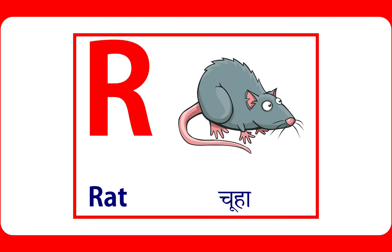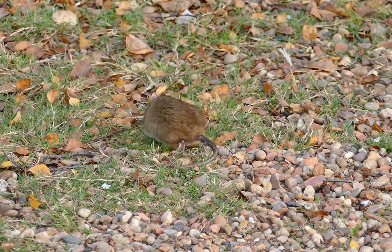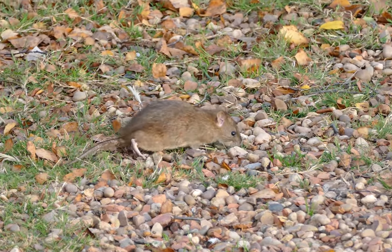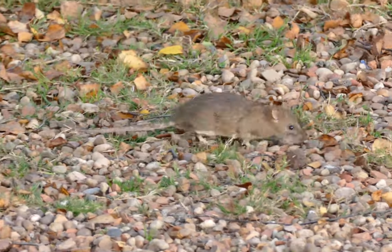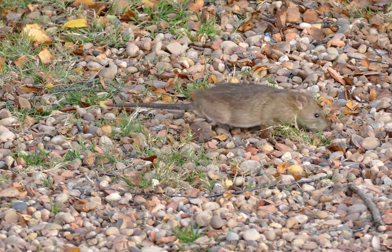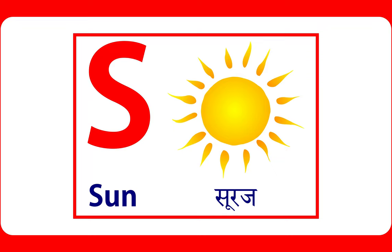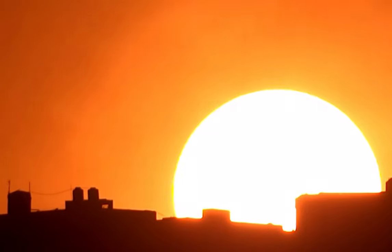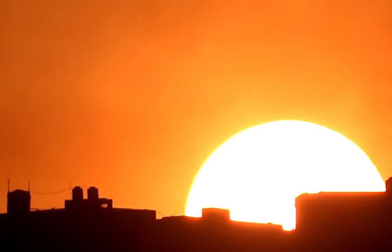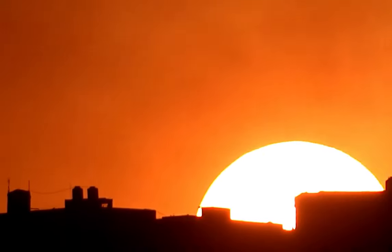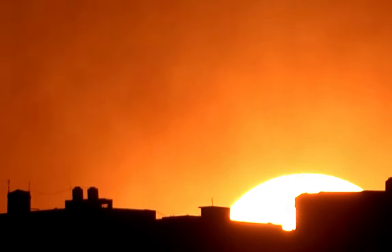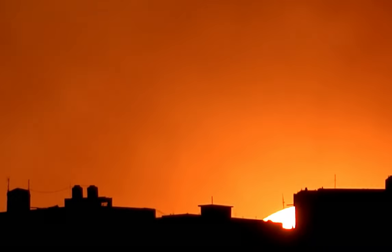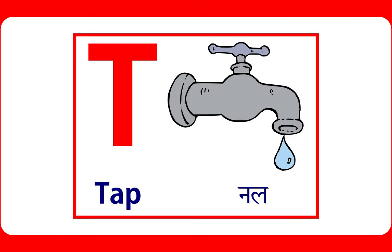R is for rat. Rats are mammals. S is for sun. Sun gives us light. T is for tap. Tap is used for water.